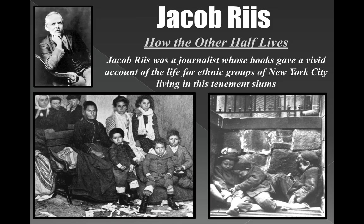Lots of people noticed there were issues with these places. One of the reformers was a guy named Jacob Riis. He wrote a book called How the Other Half Lives. He was a journalist who went into some of these slums and took pictures of what life was like for immigrants living there, to kind of wake up the public.